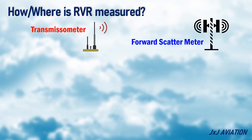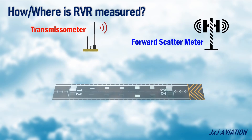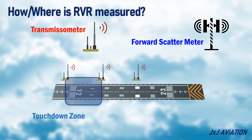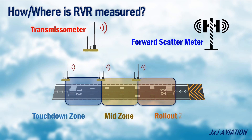On a runway, the RVR is measured in three places: in the touchdown zone, mid zone, and the rollout zone.